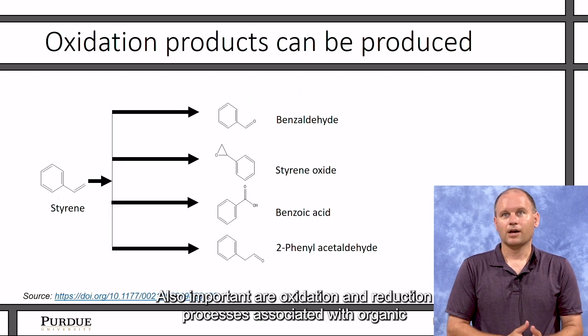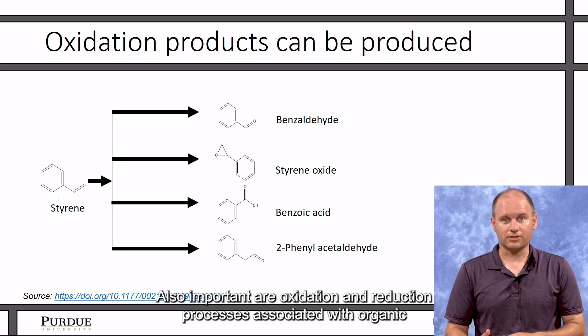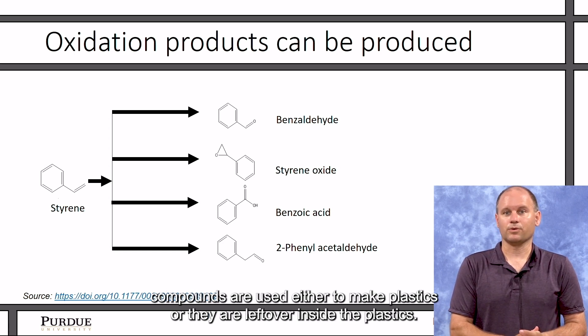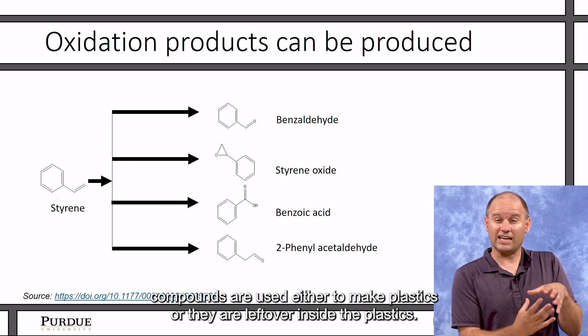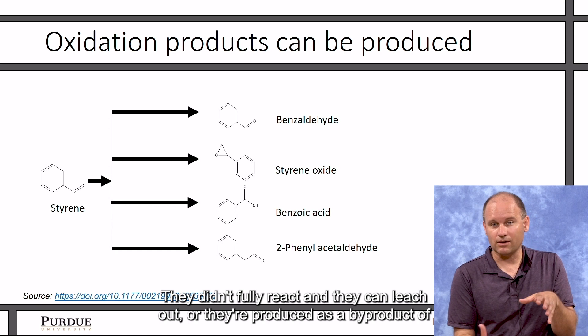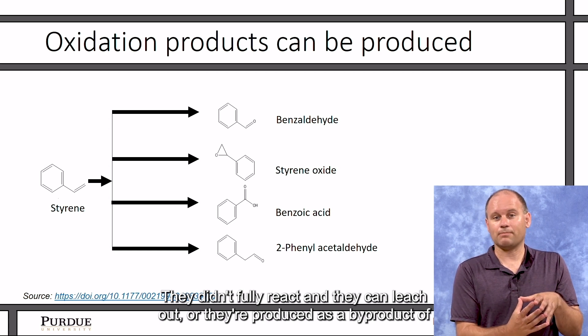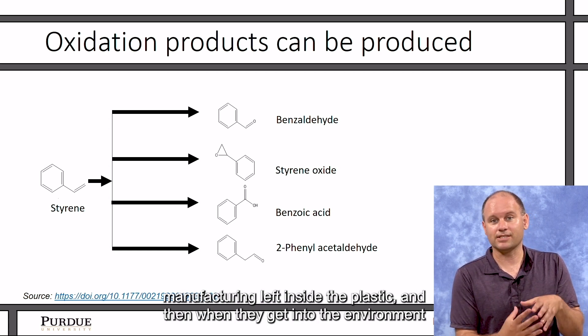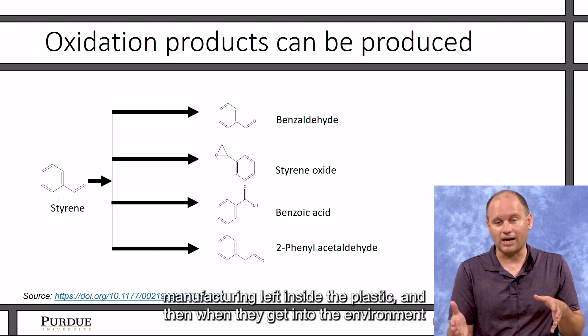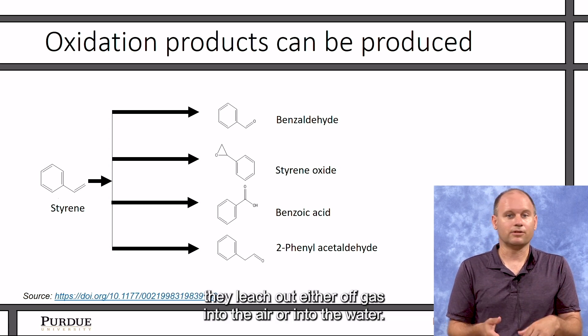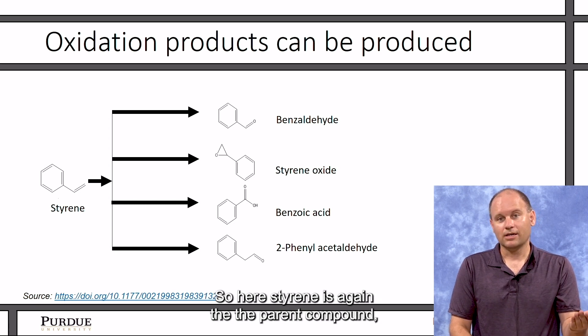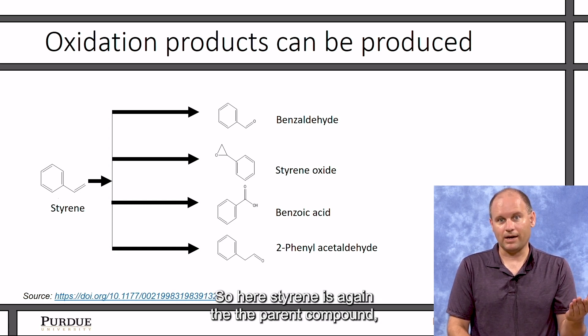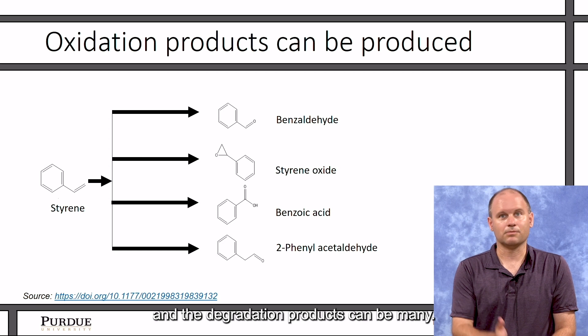Also important are oxidation and reduction processes associated with organic compounds that are used either to make plastics or they're left over inside the plastics. They didn't fully react and they can leach out, or they're produced as a byproduct of manufacturing left inside the plastic. And then when they get into the environment, they leach out either off-gassing into the air or into the water. So here, styrene is again the parent compound, and the degradation products can be many.